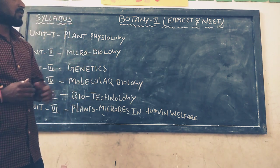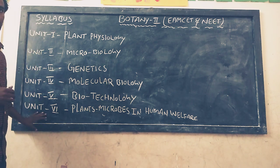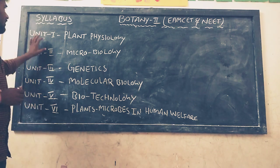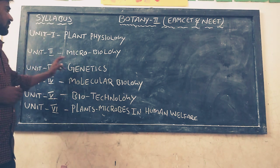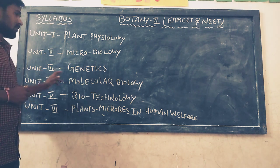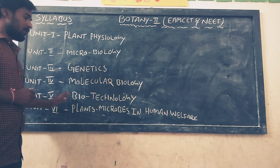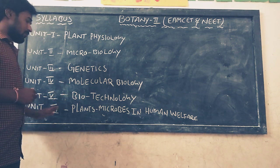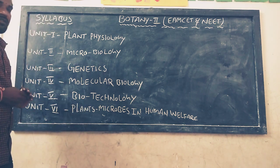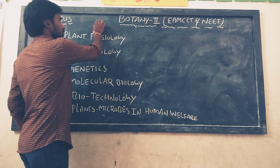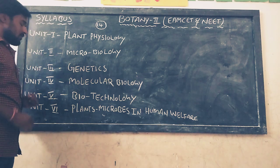If you observe the 2nd year Botany syllabus, it contains 6 units. The first unit is plant physiology, second unit is microbiology, third unit is genetics, fourth unit is molecular biology, fifth unit is biotechnology, and sixth unit is plants and microbes in human welfare. So total there are 6 units with 14 chapters.